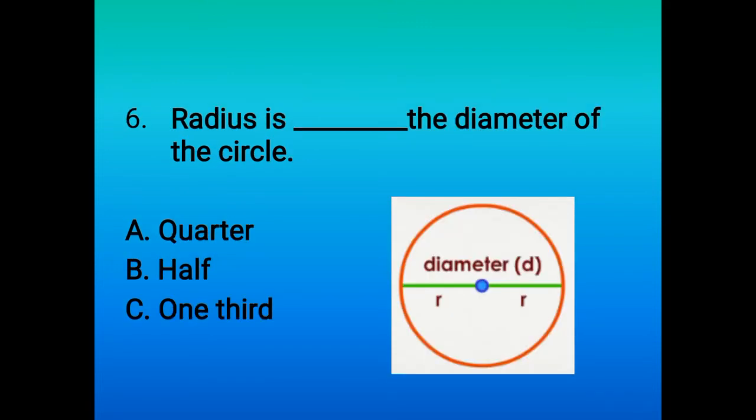Sixth question: radius is dash the diameter of the circle. This distance is called the radius and this distance is called diameter. So we know that radius is half of the diameter, so here option B is the correct option.